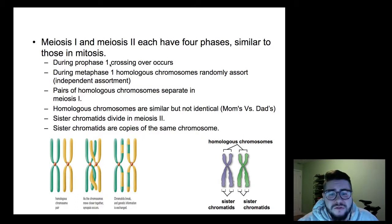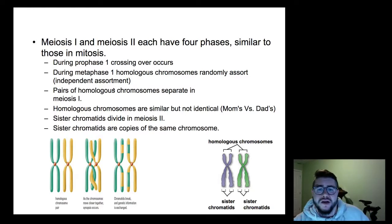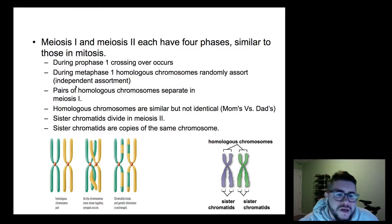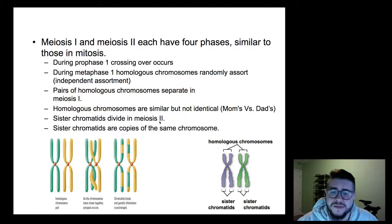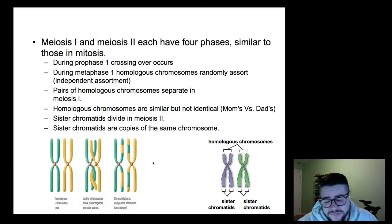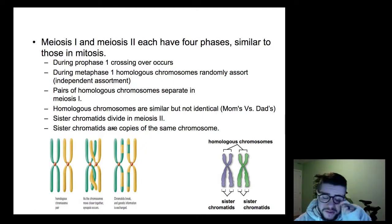There's a process called crossing over, which occurs during prophase one — and prophase one takes place in meiosis one. During metaphase one, you have homologous chromosomes randomly assort, and that leads to something called independent assortment. Pairs of homologous chromosomes separate in meiosis one. Homologous chromosomes are similar but not identical — one from mom, one from dad. In meiosis two, sister chromatids separate. A chromosome is made up of sister chromatids that are usually identical copies of each other. I'm going to take you step by step through each of these things.